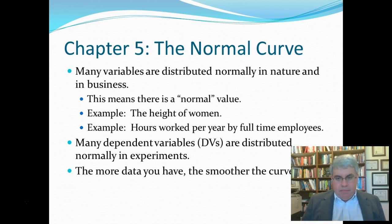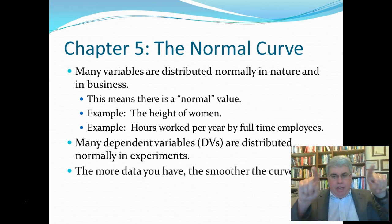Now, another example would be the hours worked per year by full-time employees. In America, that's about 1,900 hours per year. There's some that work between 1,900 and 2,000, and some between 1,800 and 1,900. And a few working more than 2,000, and a few working less than 2,000. But it comes out as normally distributed, with most full-time workers working in that middle range.